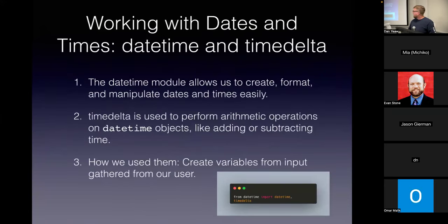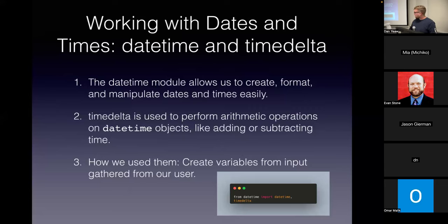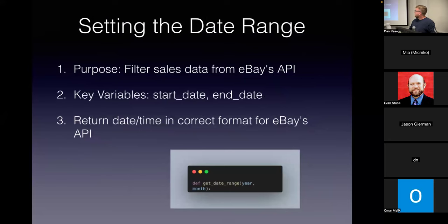These next slides are an introduction to the flow of the project and some of the challenges we'll need to solve. We're going to work with dates and times using the datetime module and the timedelta class. The datetime module lets us create, format, and manipulate dates and times easily. timedelta performs arithmetic on datetime objects like adding or subtracting time. We'll use them to create variables based on user input. The first thing we need to figure out is how to set a date range to filter our sales data from eBay's API, creating start date and end date variables in the format required by eBay's API.